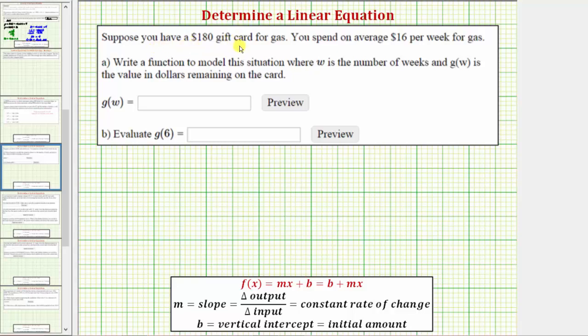Suppose you have a $180 gift card for gas. You spend on average $16 per week for gas. We're asked about a function to model this situation where w is the number of weeks and g(w) is the value in dollars remaining on the card.